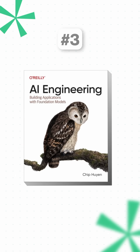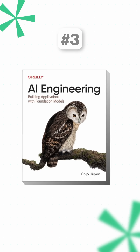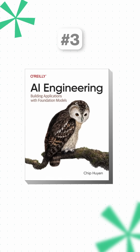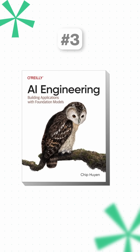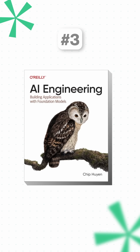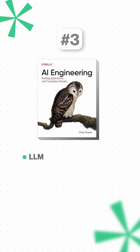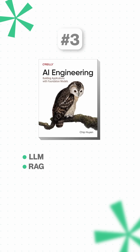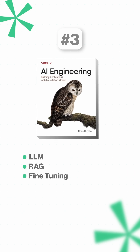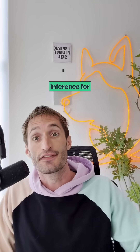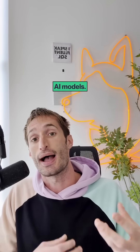Number three is AI Engineering by Chip Huyen. This book covers everything you need to know about the history of LLMs, RAG, fine-tuning, and how to optimize inference for different AI models. I highly recommend checking out that book as well.